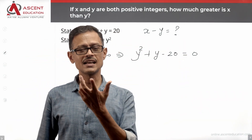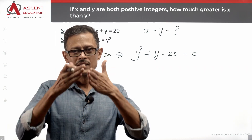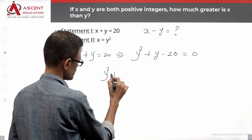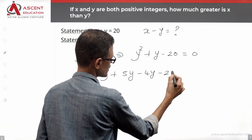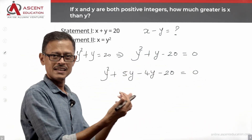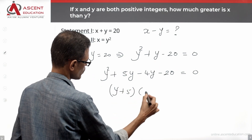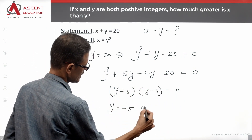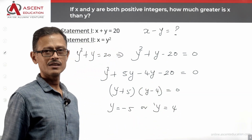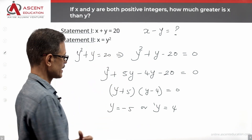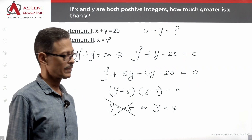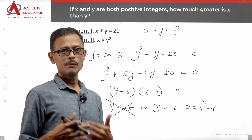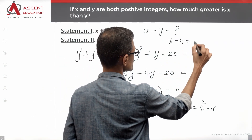To factorize y squared plus y minus 20 = 0: the product of the first and last terms is minus 20, and the middle term is 1. Splitting: y squared plus 5y minus 4y minus 20 = 0, which factors as (y + 5)(y minus 4) = 0. So y = minus 5 or y = 4. Since x and y must be positive integers, y cannot be minus 5. Therefore y = 4, x = 4 squared = 16, and x minus y = 16 minus 4 = 12.